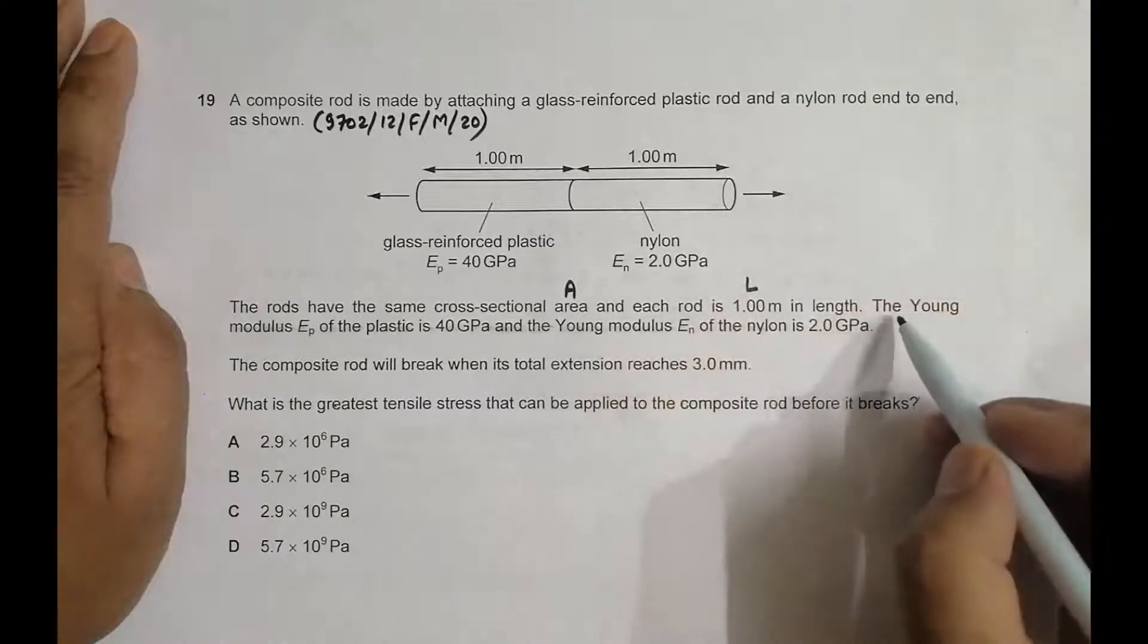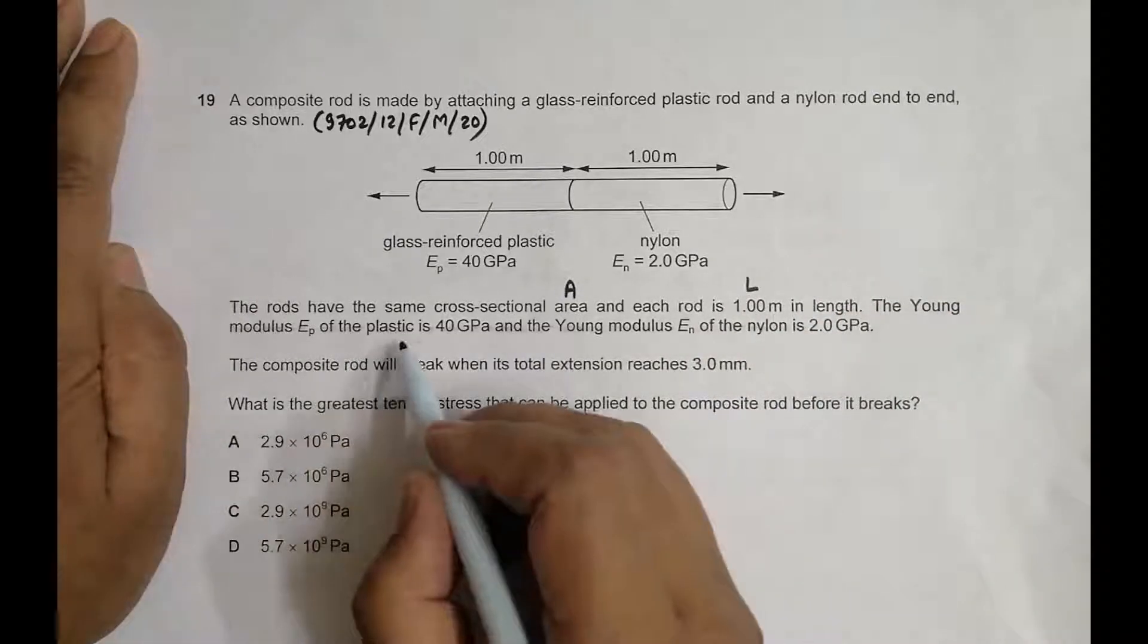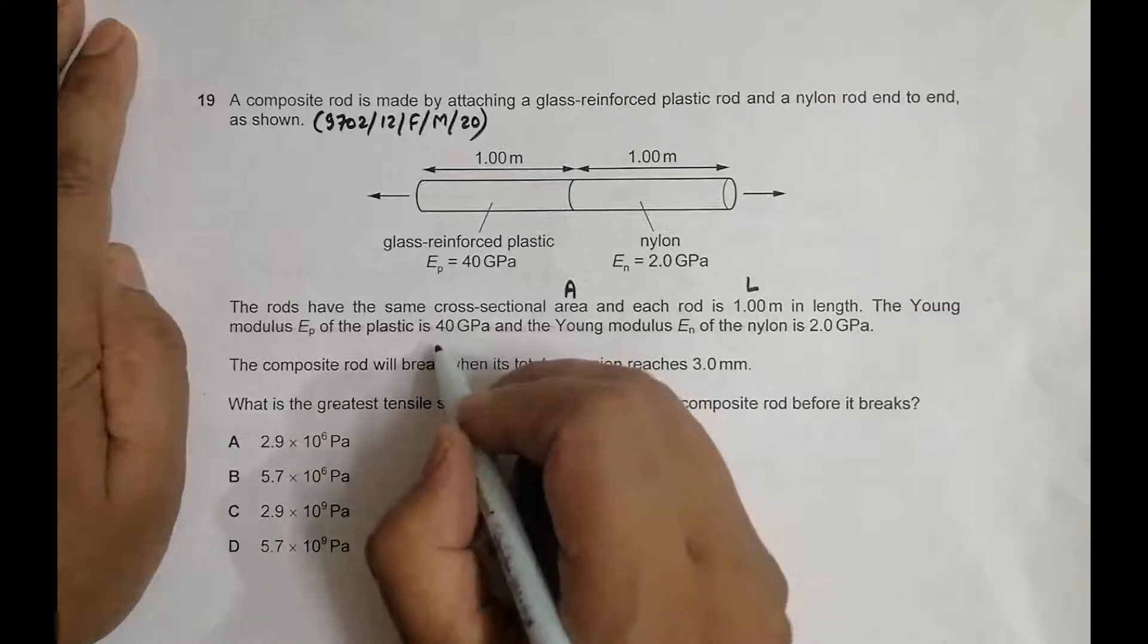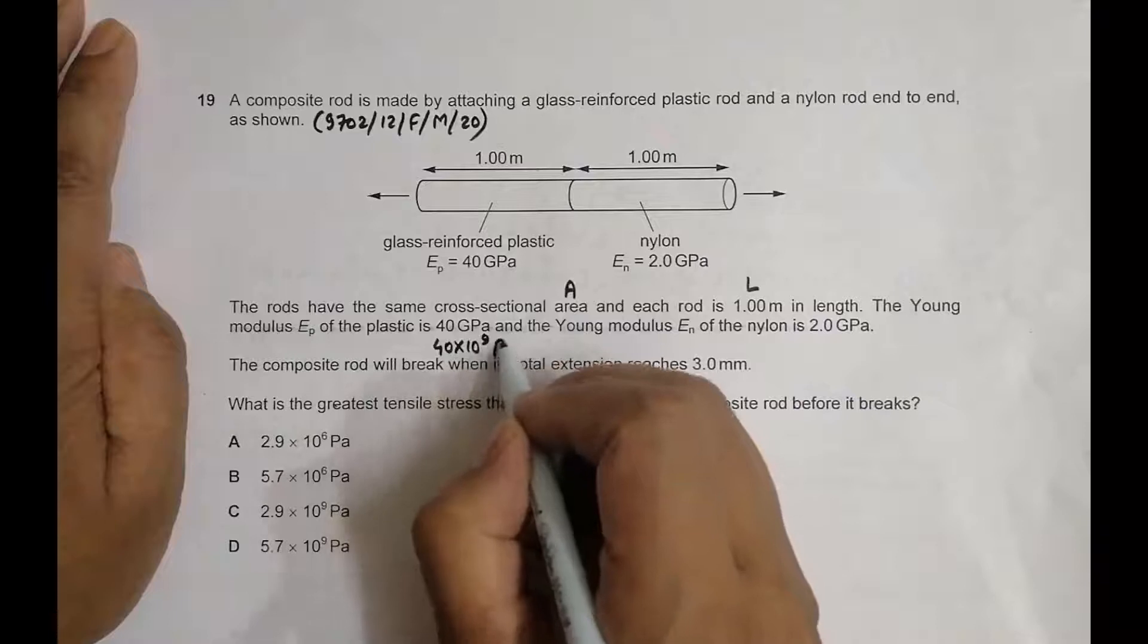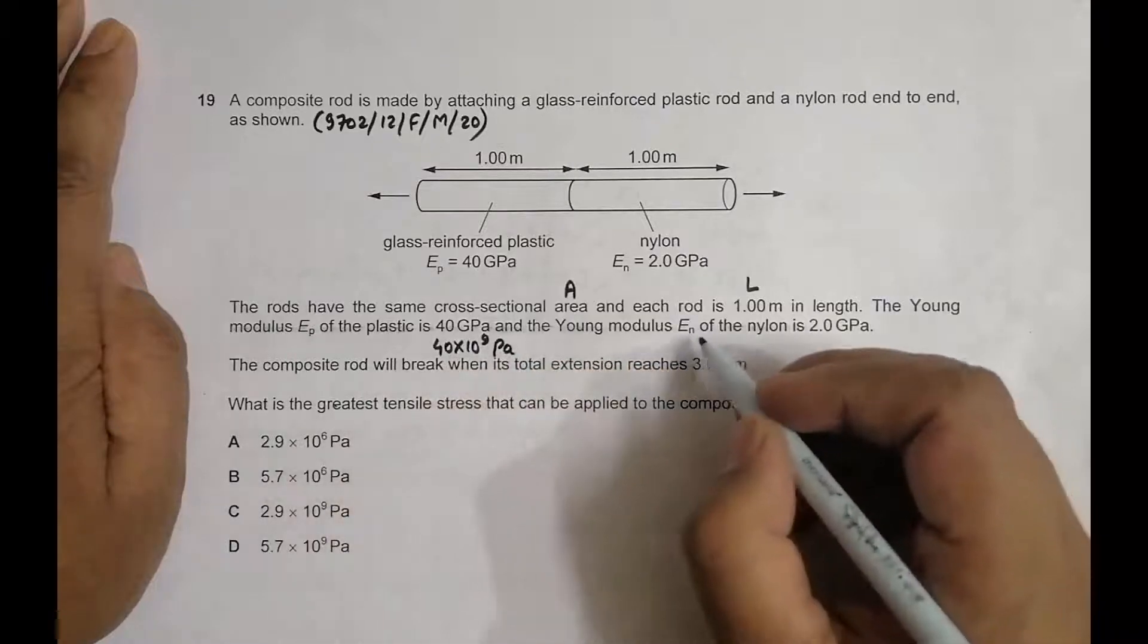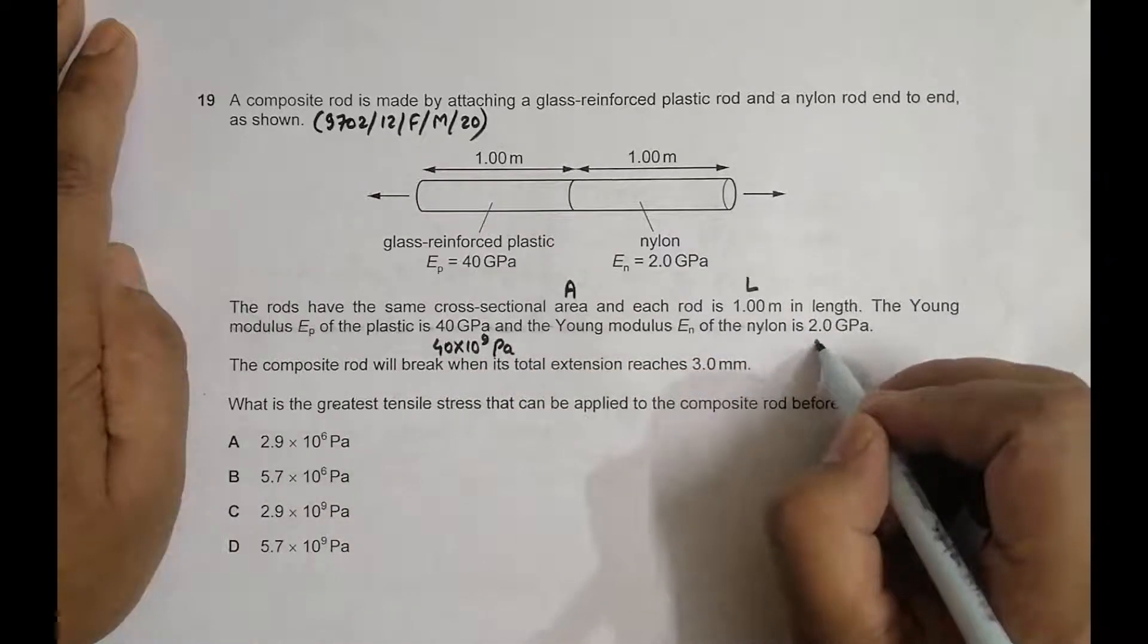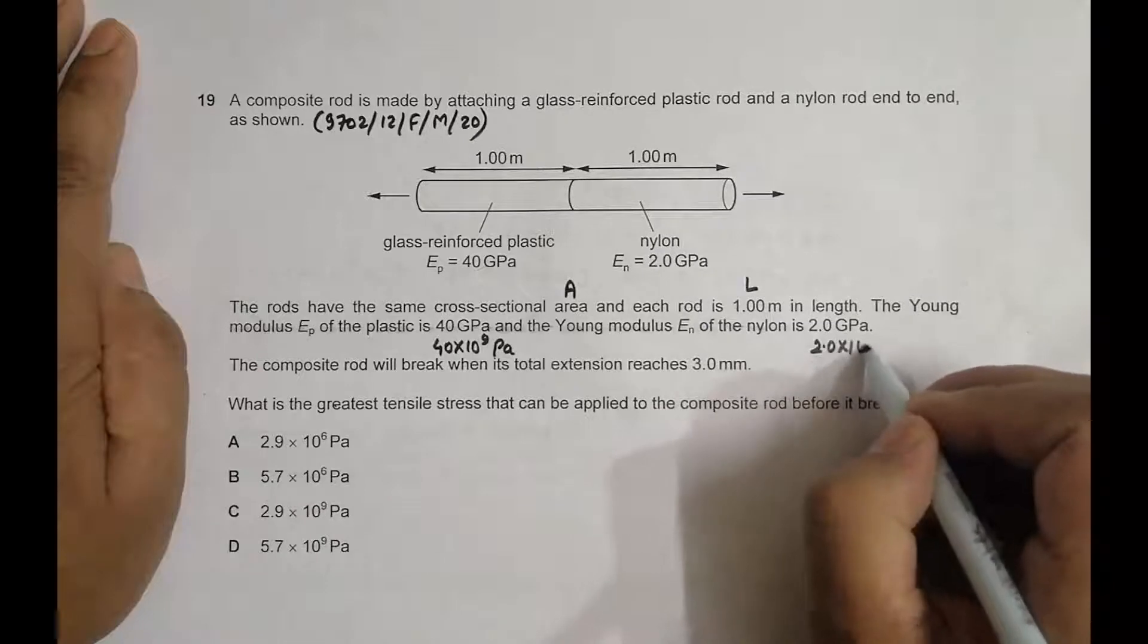The Young's modulus Ep of the plastic is 40 GPa, which is 40×10⁹ Pa, and the Young's modulus En of the nylon is 2.0×10⁹ Pa.